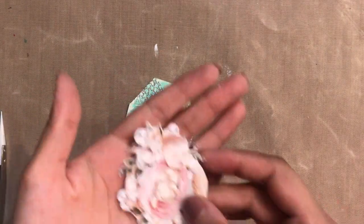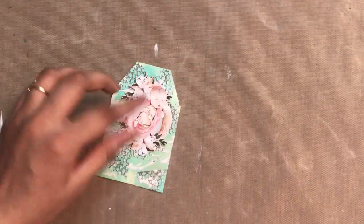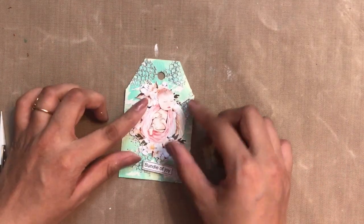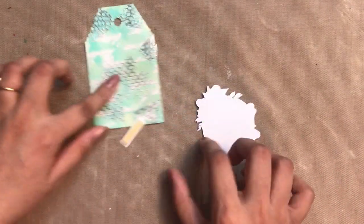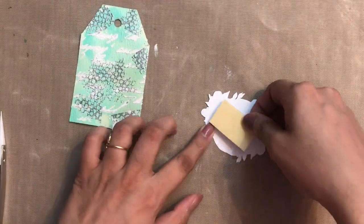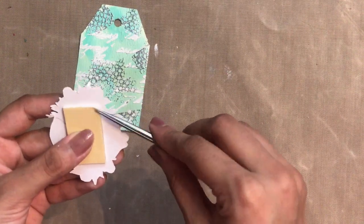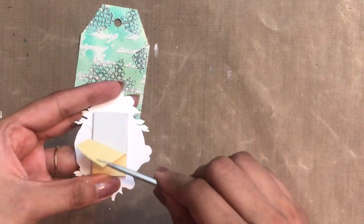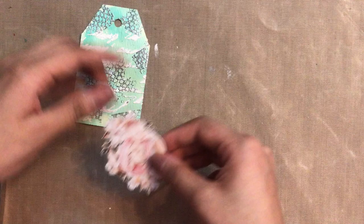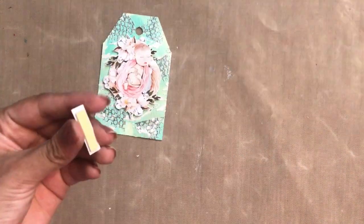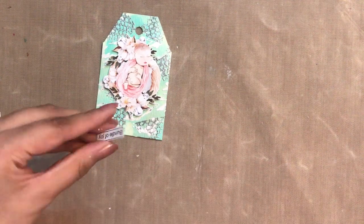Now here I have this motif and this sentiment from the mini motif sheet. I've fussy cut it, and now on the back side I'm going to apply 3D foam tape. With the help of sharp and fine-tipped tweezers, I'm going to remove the backing of the 3D foam tape and simply add it on the base like this. Similarly, I'll remove the backing of this sentiment and add it to my tag.